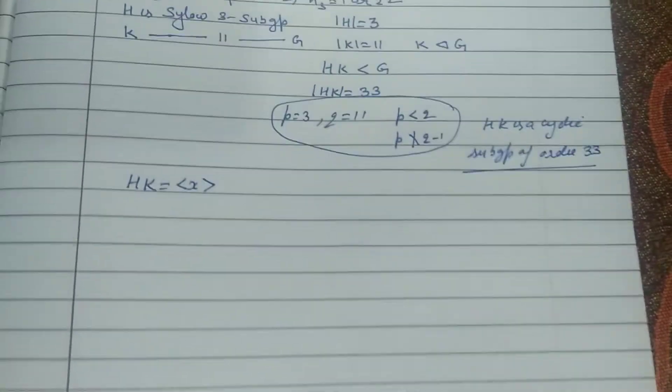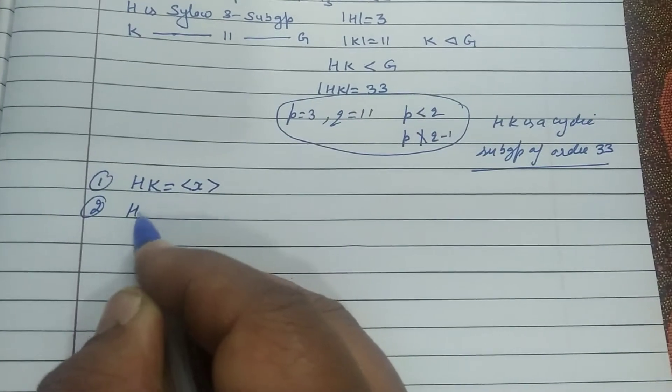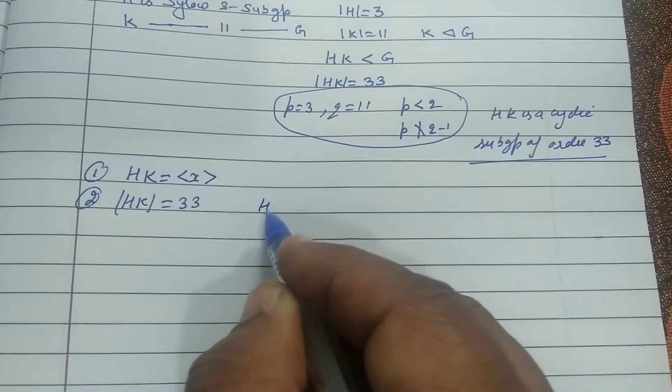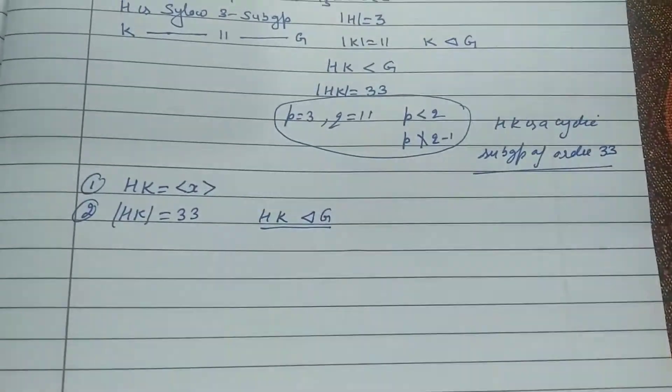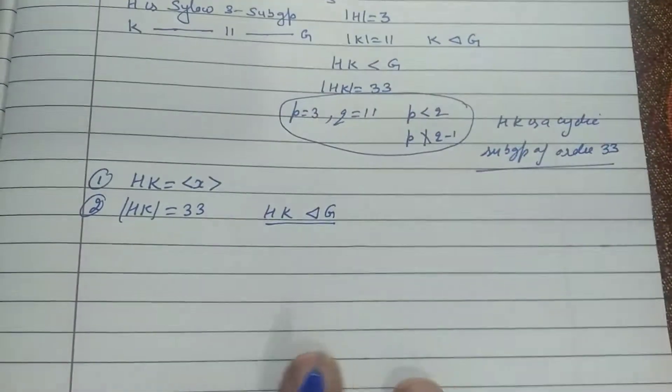One thing is clear to all. Second thing: order of HK is 33. It is normal subgroup of G also, because its index is 2 in 66. Do bathe clear hogi? Third thing.